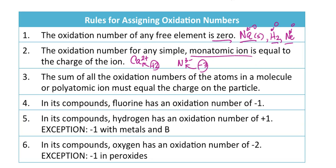The next rule relates oxidation numbers to each other. For a molecule — since molecules bear no charge — the oxidation numbers must all add up to zero. For a polyatomic ion, the oxidation numbers must add up to the charge on the ion. I'll demonstrate rule 3 in a little more detail once we've gone through all the rules.